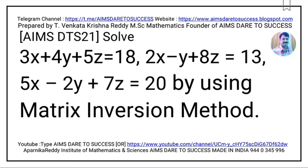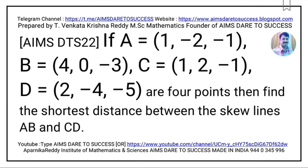Question 20: Solve the system of equations — 3x + 4y + 5z = 18; 2x − y + 8z = 13; 5x − 2y + 7z = 20 — by using the matrix inversion method. This question is also from Matrices.